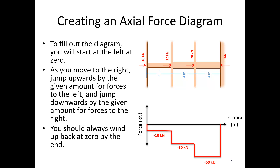So this plot is the axial force diagram. It shows the internal tension or compression in the beam as I move left to right — I'd rotate it back to visualize it vertically. I can see 10 kilonewtons of compression in the first section, 30 kilonewtons of compression in the second section, and 50 kilonewtons of compression in the third section. So I've got three possible cross-sections and my plot is showing all three of those internal normal forces.